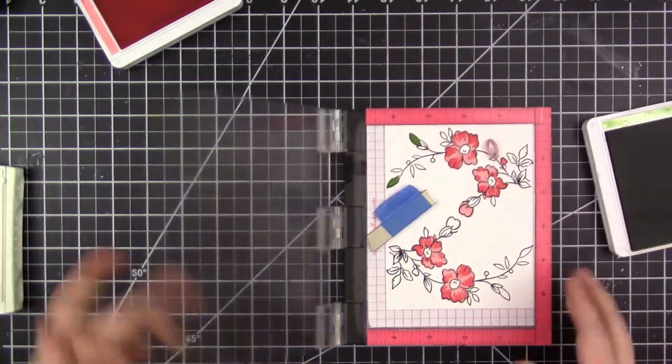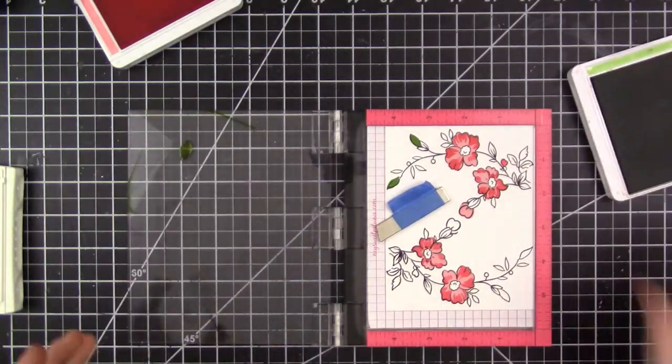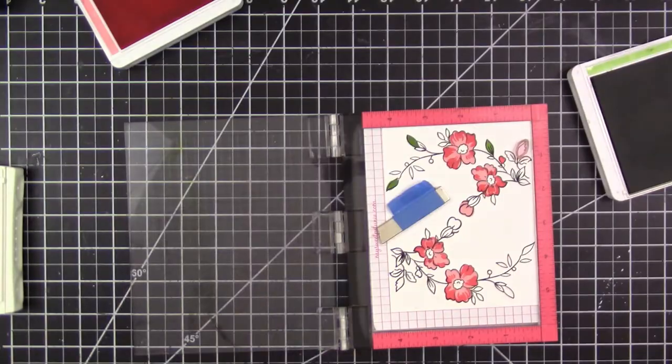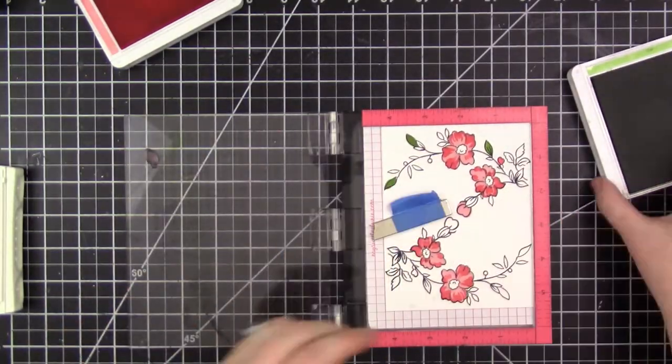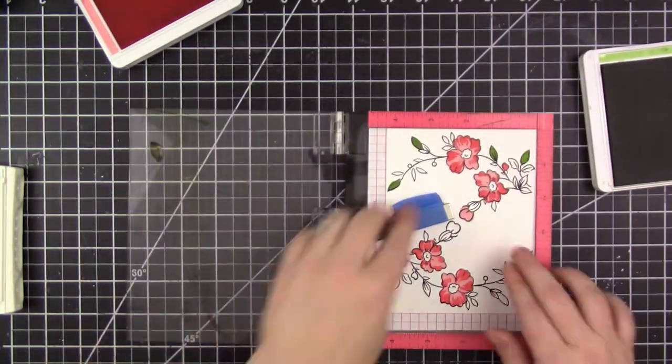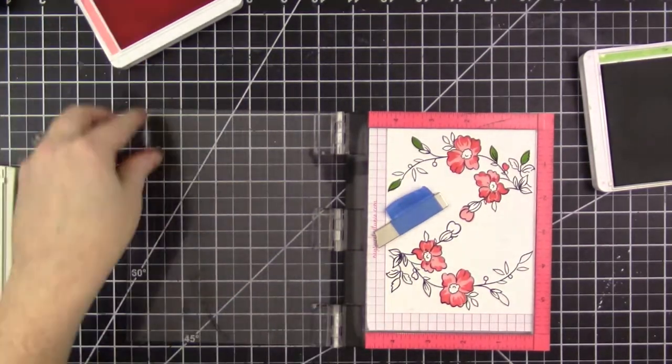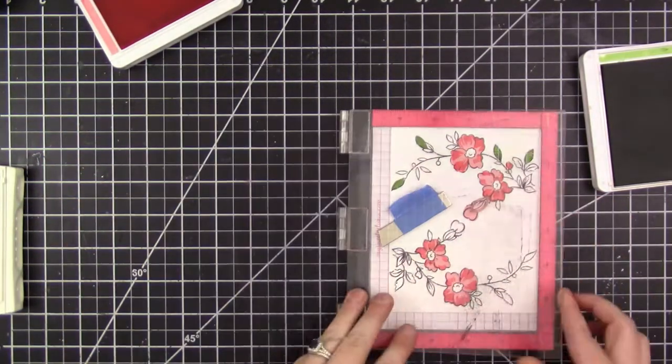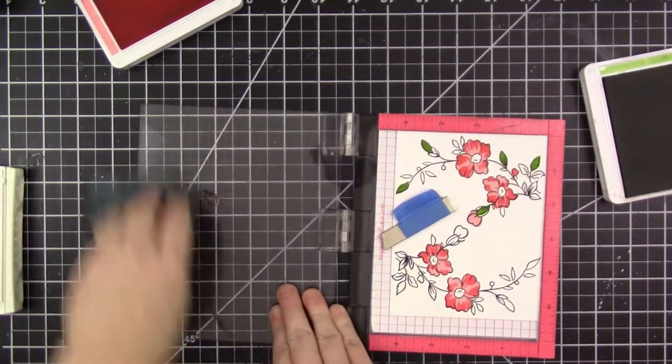This stamp set also includes some small stamps that you can use to fill in other parts of the image. I stamped some leaves and some smaller buds, but you could also just color these in by hand, which is what I do with a water brush.